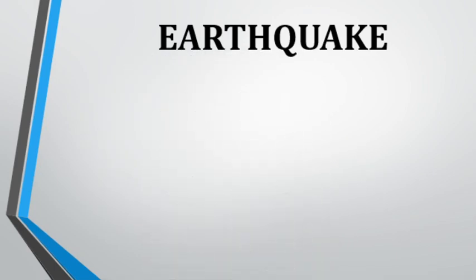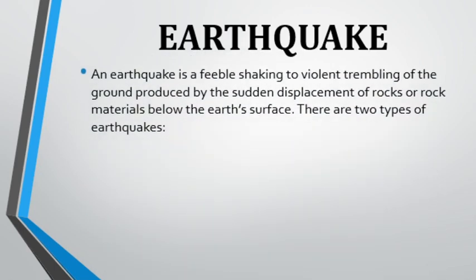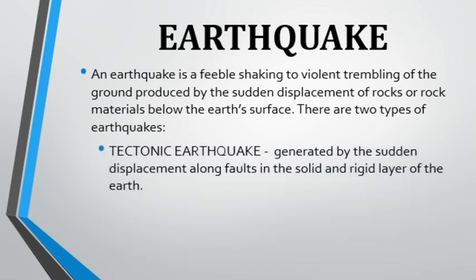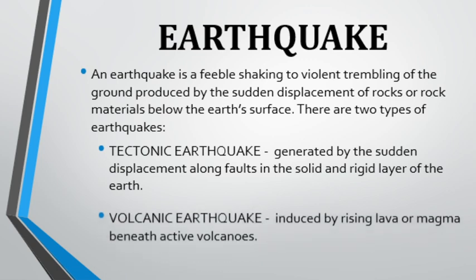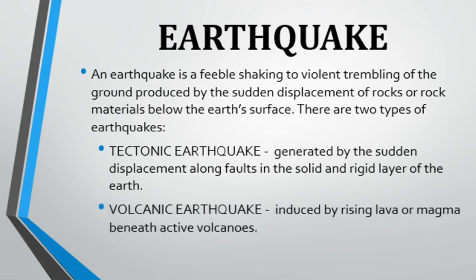How do we define an earthquake? As we have all felt and experienced it firsthand, an earthquake is a feeble shaking to a violent trembling of the ground, produced by a sudden displacement of rocks or rock materials below the earth's surface. Earthquakes are primarily categorized into two types: first, tectonic earthquakes generated by sudden displacement along faults, and second, volcanic earthquakes induced by the rising of lava or magma beneath active volcanoes.